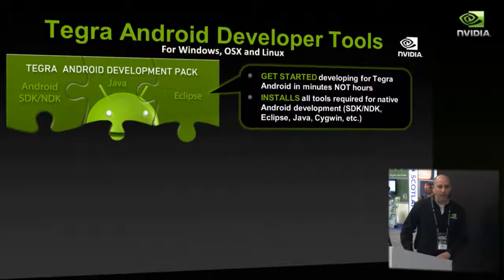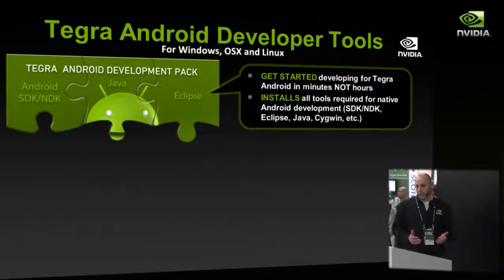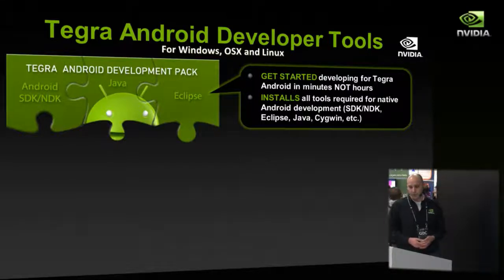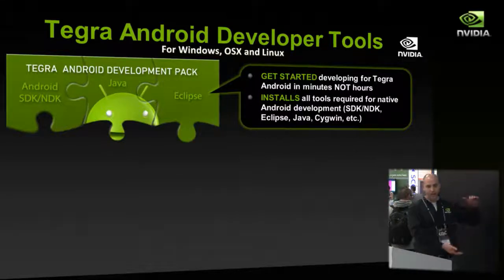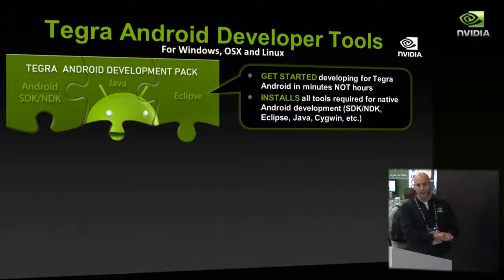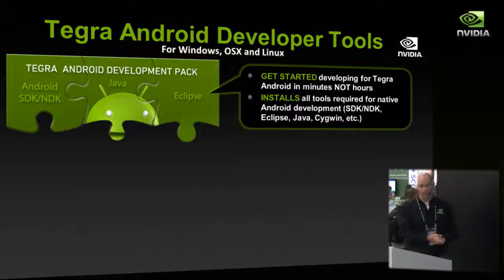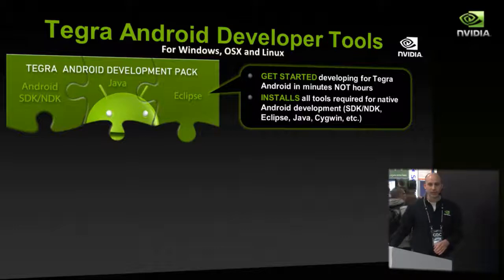Looking at what we offer as a developer, we have a solution that encompasses Windows, Mac OS X, and Linux. The first thing you're going to do is get the Tegra Android development pack. This condenses the long list of downloads into one installer. You get the Android SDK and NDK, the most recent versions, the Java development kit, and Eclipse with the Android development tools. This will take about 10 to 15 minutes to download and install, as opposed to several hours searching the web for the right versions.